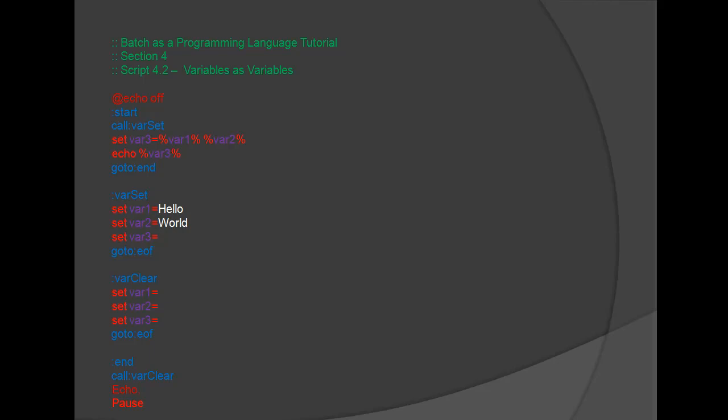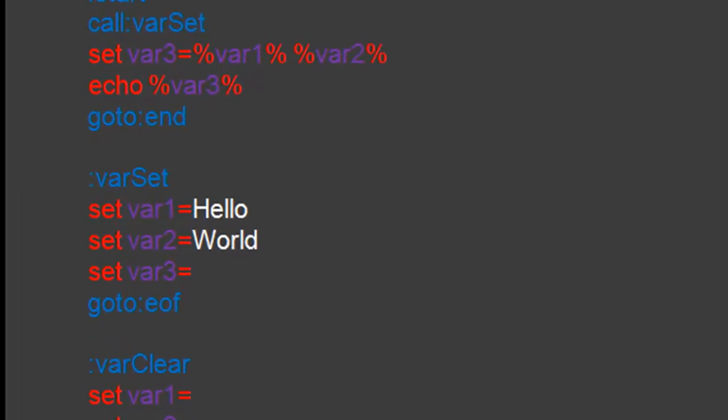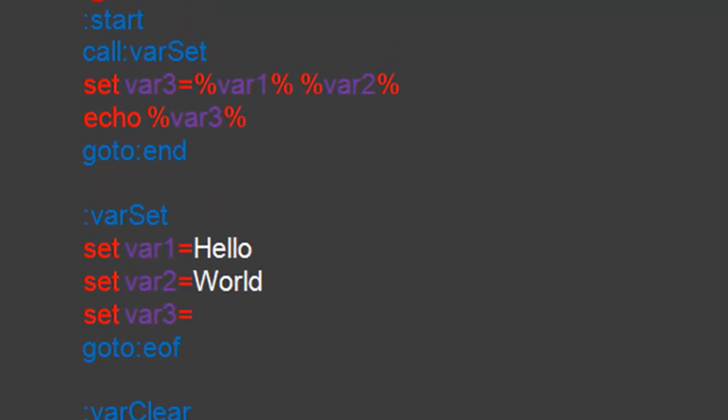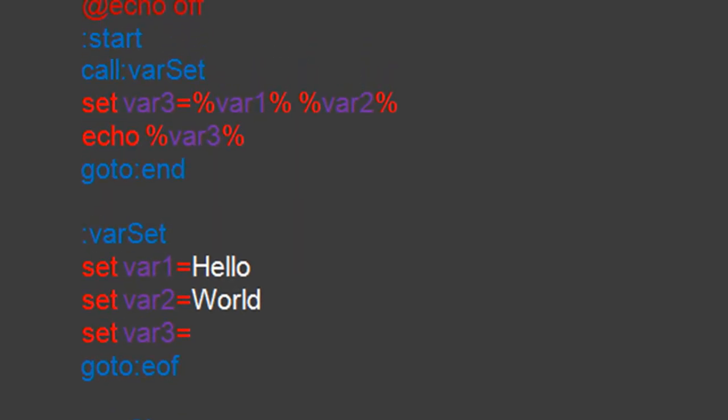In script 4.2, you can see that var1 is hello, var2 is world, and var3 is var1 space var2. We then echo the value of var3.